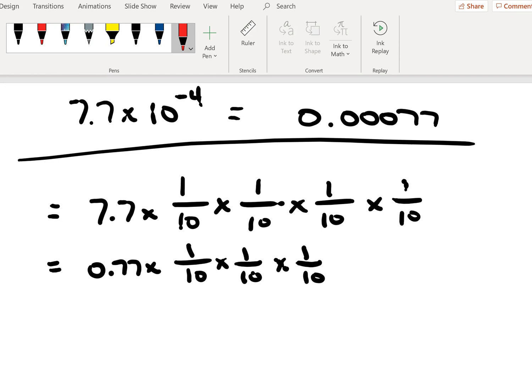In this step, when we execute the first multiplication here, the 7.7 times 1 over 10, we see that it has the effect of moving the decimal one place to the left. When we divide by 10, that's what the effect is.